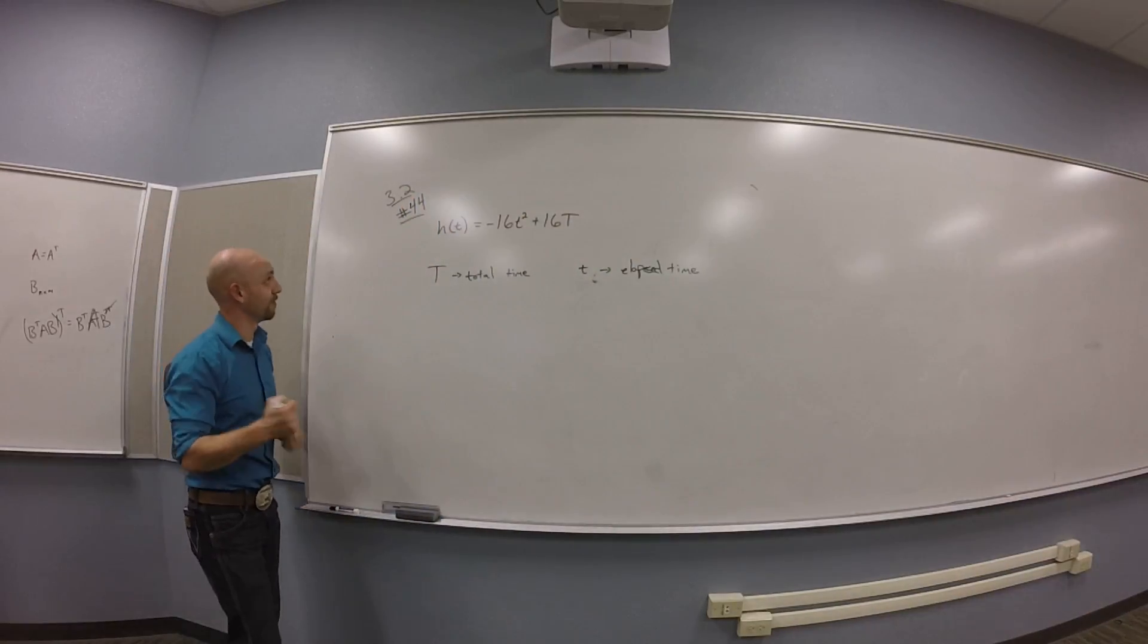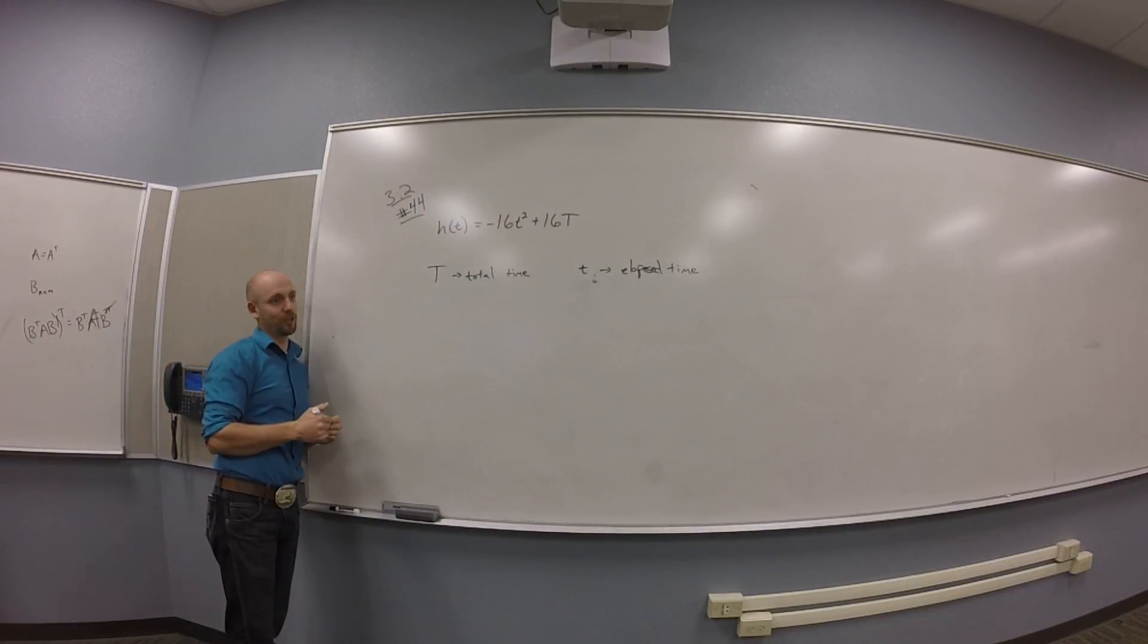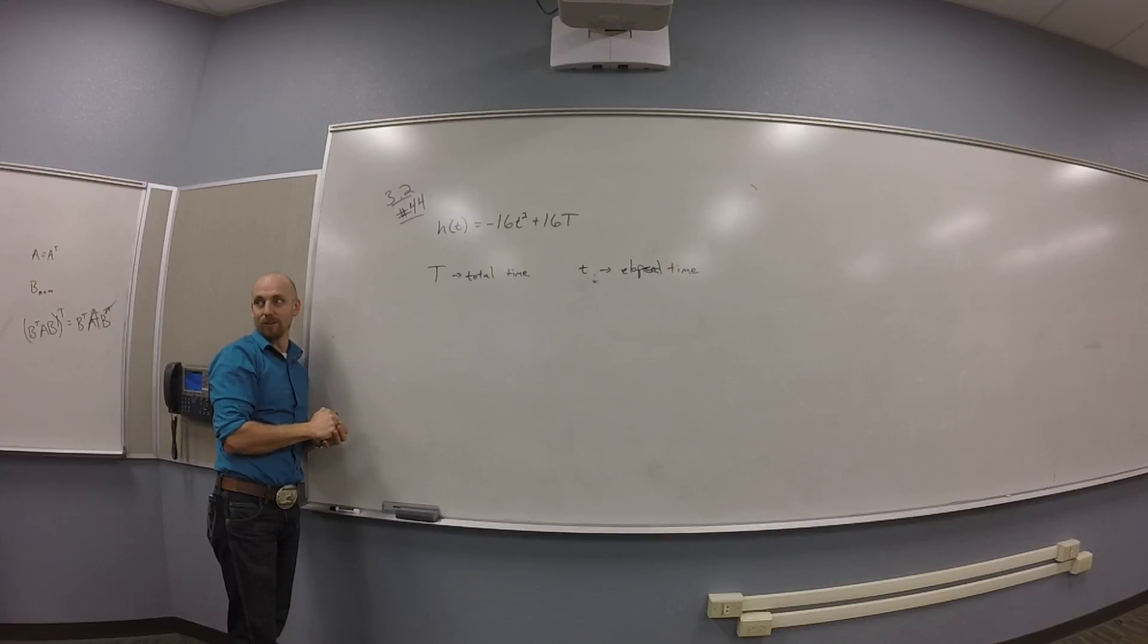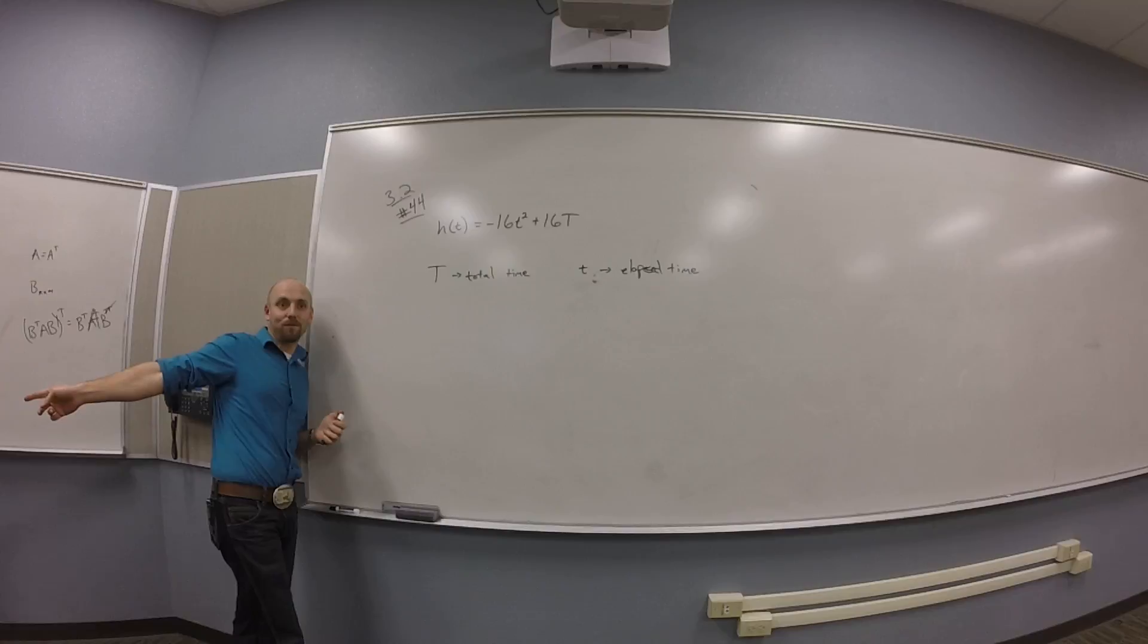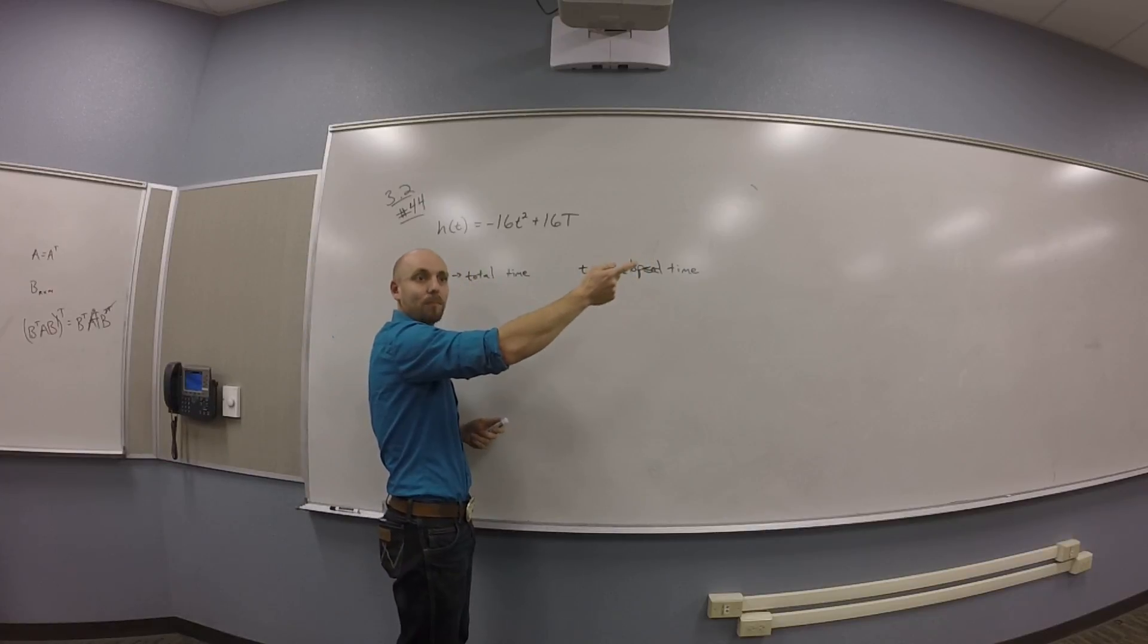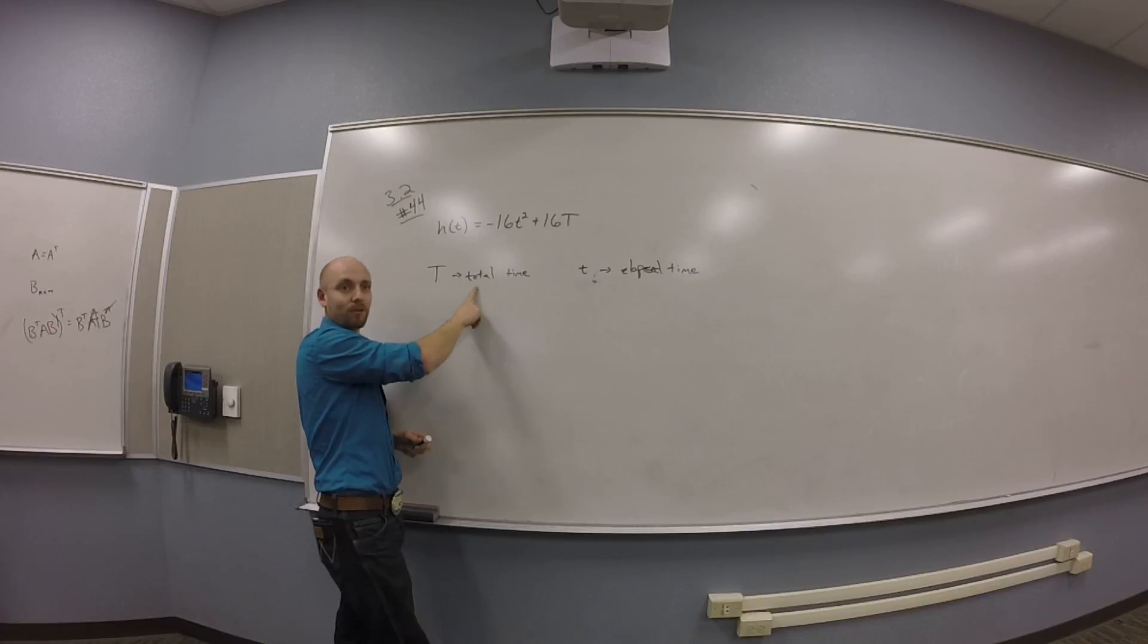On number 44 in section 3.2, we have a function h of little t, which is negative 16t squared plus 16 capital T. Capital T is the total time. What does h do? It gives you a height. So h is a height function. It takes elapsed time and turns it into height. Little t is the elapsed time that some ballerina is jumping, and T is the total time the ballerina spends in the air.